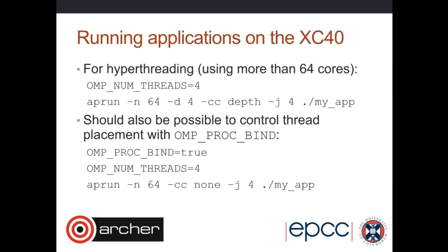We're expecting the system to be live for users next week. In the first month, people can get access and it won't cost them anything in terms of Archer budgets. After the first month, any use of the KNL will be budgeted from your standard Archer budget. An interjection clarified that there are in fact separate budgets for the KNL system and for the standard Archer system. All Archer users will be able to request the KNL budget. They are currently strictly separate, though there is a discussion with EPSRC about access mechanisms that may change.